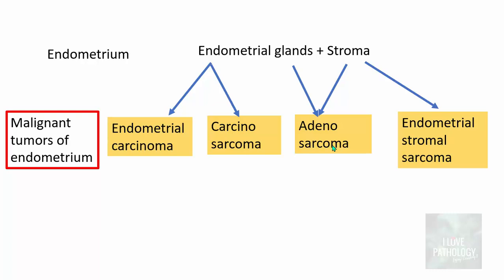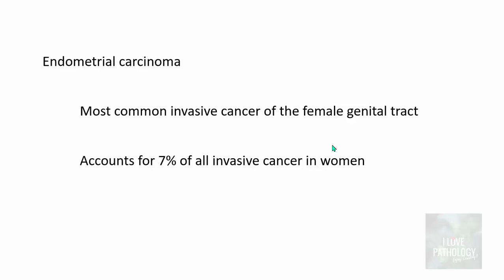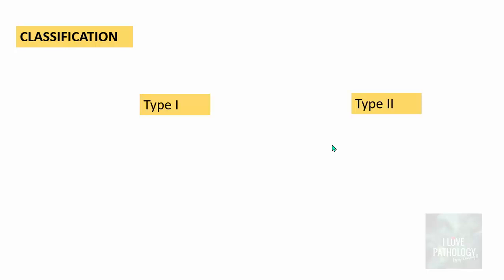We will understand each one of these entities one by one. The first one is endometrial carcinoma — this is the most common invasive cancer of the female genital tract, accounting for around 7% of all invasive cancers in women, except skin cancers. Endometrial carcinomas are classified as Type 1 and Type 2 carcinomas, each being a distinct entity in terms of morphology, clinical features, and prognosis.